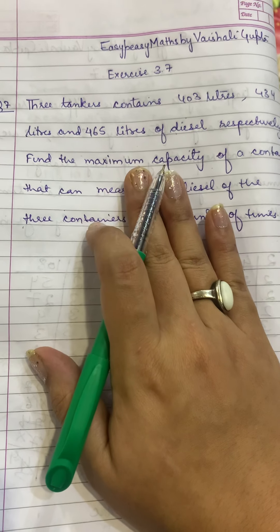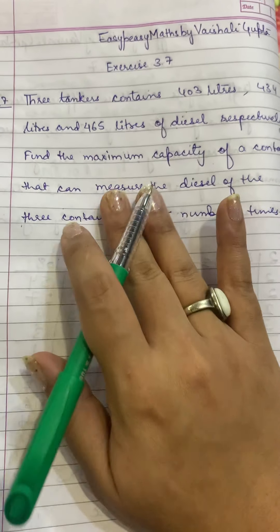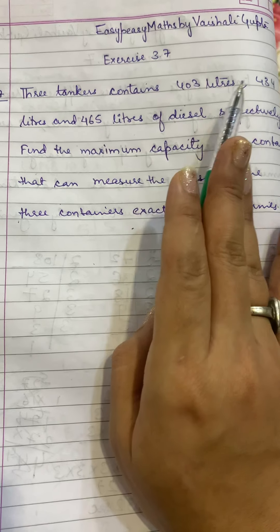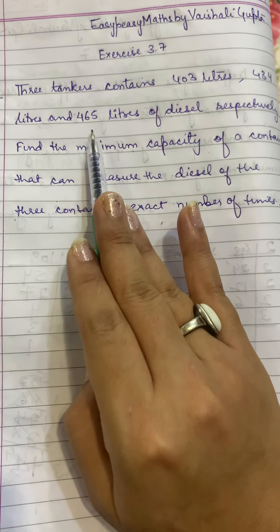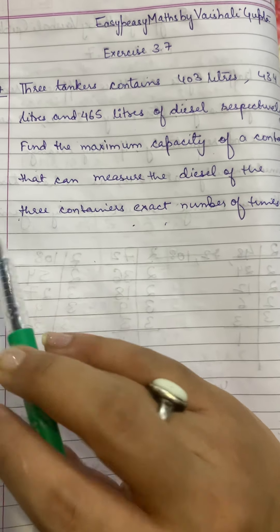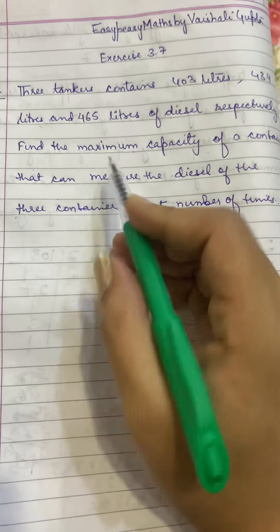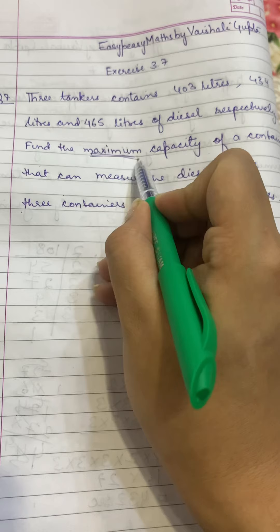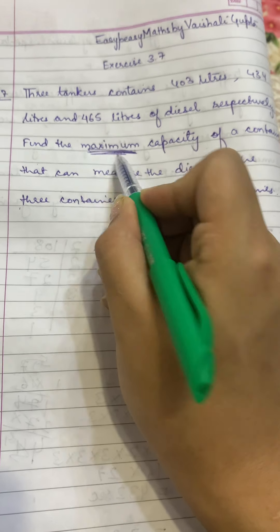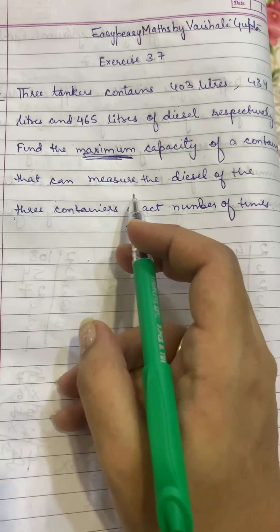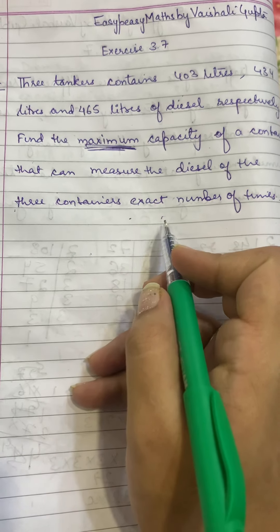In this question we can understand that there are three tankers, one with 403 liters, one with 434 liters, and one with 465 liters. We have to make a container that has maximum capacity. Because we have maximum capacity, we know that HCF is the highest common factor that can measure the diesel exact number of times.